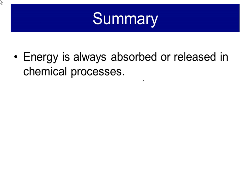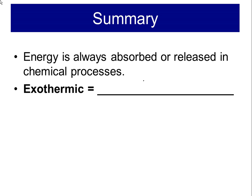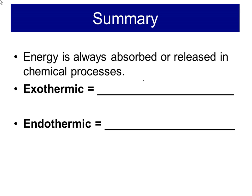Summary: energy is always absorbed or released in chemical processes. An exothermic reaction is when heat is released — the surroundings gain heat and feel warm. An endothermic reaction is when heat is absorbed by the system — the surroundings lose heat and feel cold. And lastly, 1.00 calorie equals 4.184 joules.